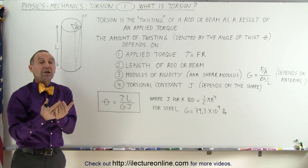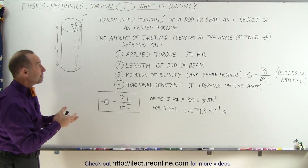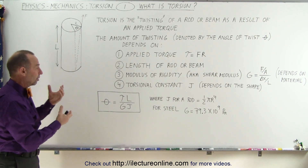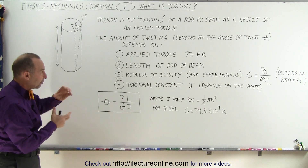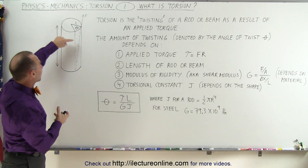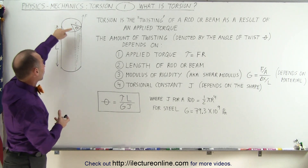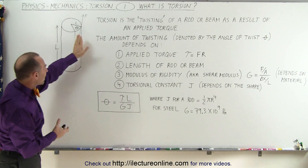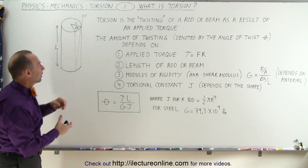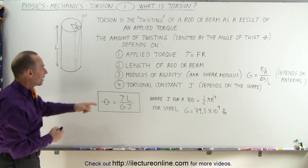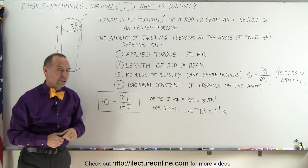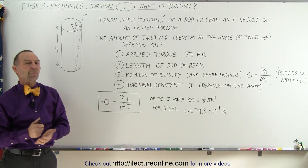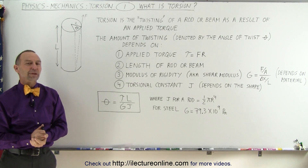At least now you have an understanding of what we mean by torsion. It is a twisting of a rod where we have an applied force at one end and it's fixed on the other end, defined by these four constants. We'll look at those in more detail.